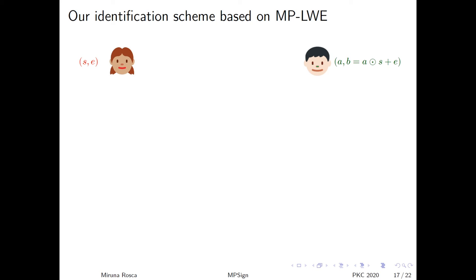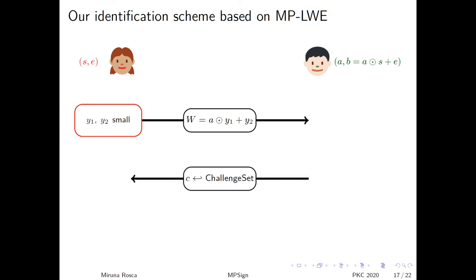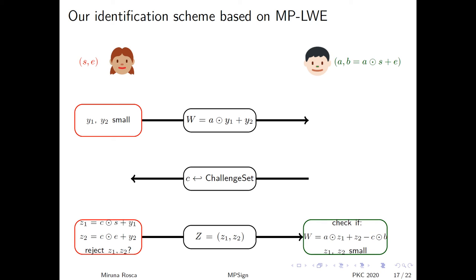In our middle product learning with errors identification scheme, the secret key consists of a pair of small secret and small error. And the verification key consists of a middle product learning with errors sample computed using S and E. So the verification key is A and B where B is A middle product S plus E. Alice chooses small elements Y1 and Y2, sends a commitment W to Bob. Bob answers back with the challenge and in response Alice computes two elements Z1 and Z2 and if they don't reveal any information about S and E about her secret key she decides to send Z1 and Z2 to Bob as a response. Otherwise Alice just aborts the protocol. When Bob wants to check the identity of Alice he has to check these two properties here.